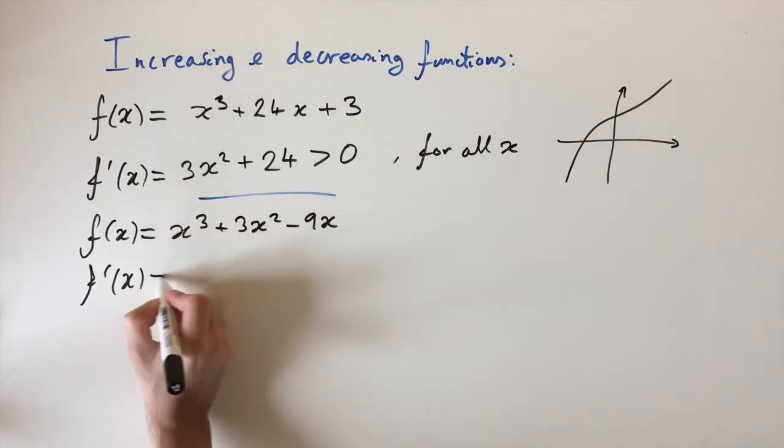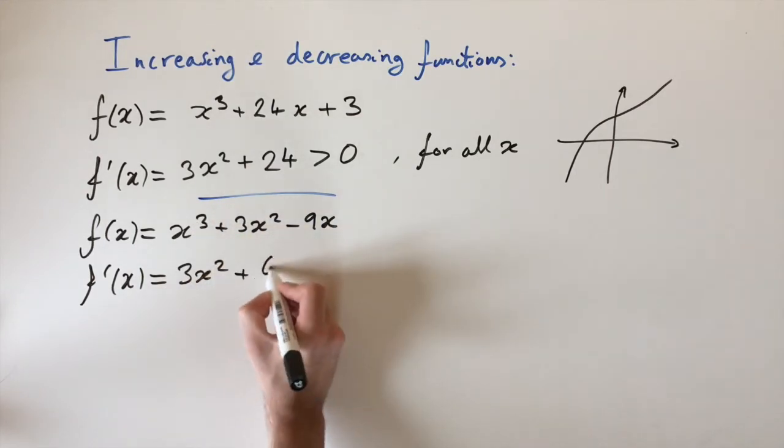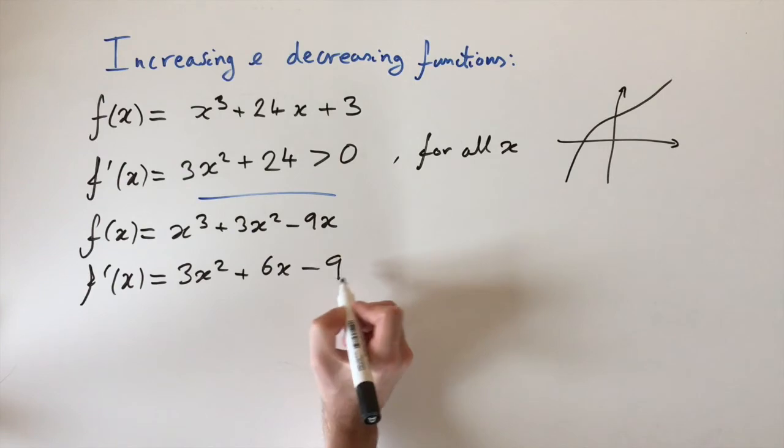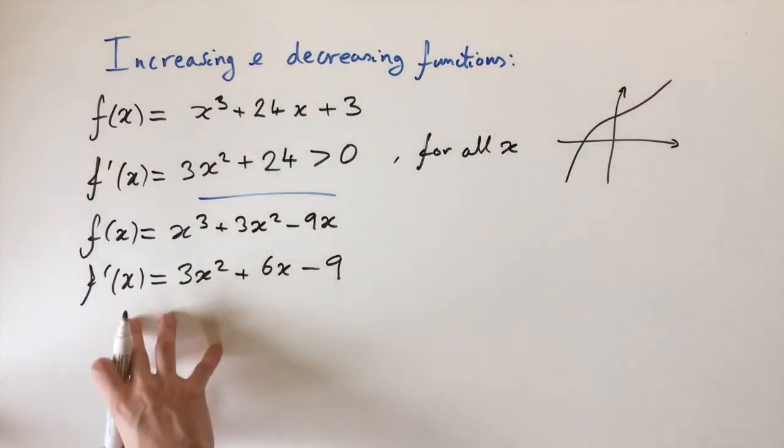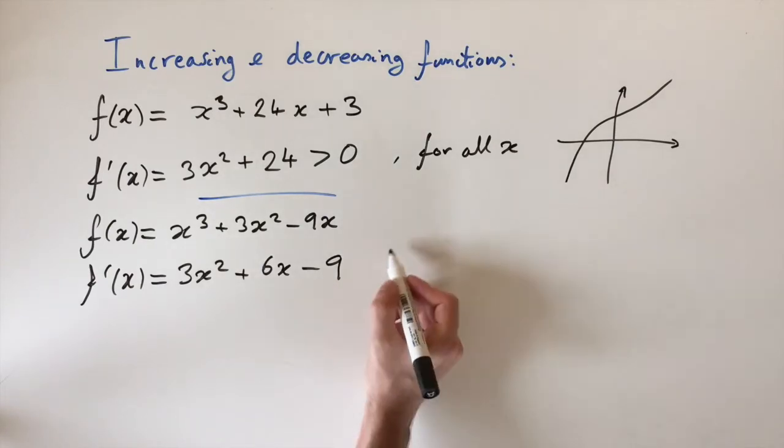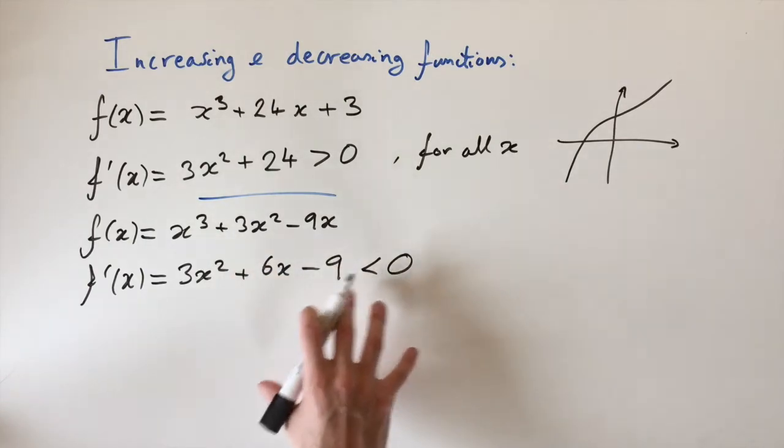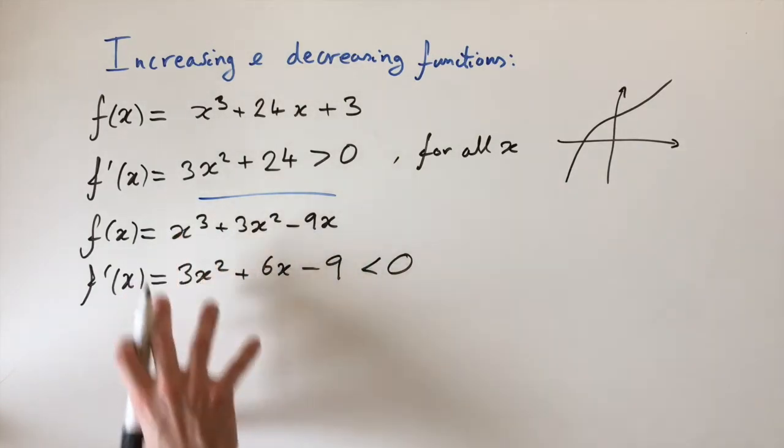f'(x), this is 3x² + 6x - 9. So to find when it's decreasing, we need to set this function to be less than 0. So I'm just going to write, so strictly less than 0. And then if we can solve this inequality, then this gives us when, what values of x this function is decreasing.